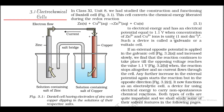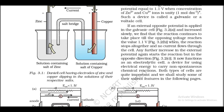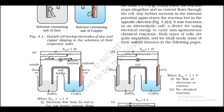If an external opposing potential is applied to the galvanic cell and increased slowly, the reaction continues to take place till the opposing voltage reaches 1.1 volt, when the reaction stops altogether and no current flows through the cell. Any further increase in the external potential starts the reaction but in the opposite direction — it now functions as an electrolytic cell, a device for using electrical energy to carry out non-spontaneous chemical reactions.